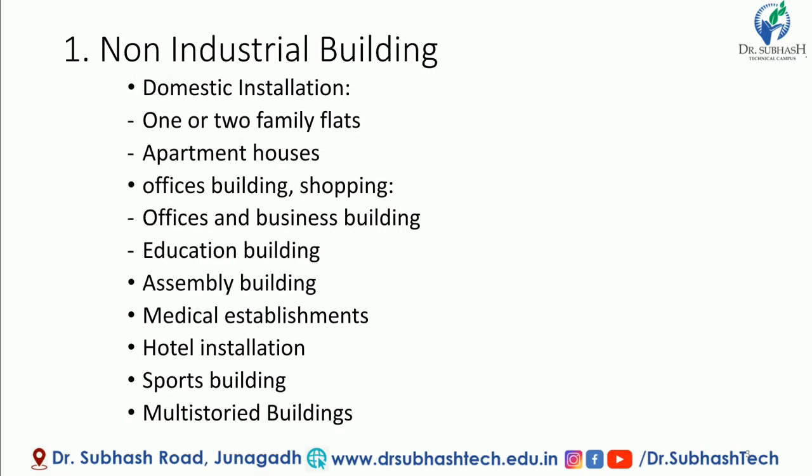Non-Industrial Building has more types. They may be classified as Domestic Installation, which includes one or two family flats, apartments, houses, office buildings and shopping complexes. Education Buildings, like colleges, study centers, and schools.